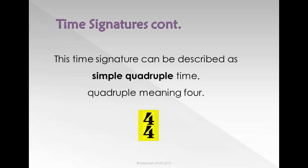This time signature can be described as simple quadruple. Simple time because the four at the bottom tells us the beat is a quarter note or a crotchet, and crotchets can be divided equally into two quavers. Quadruple because the top number is four.